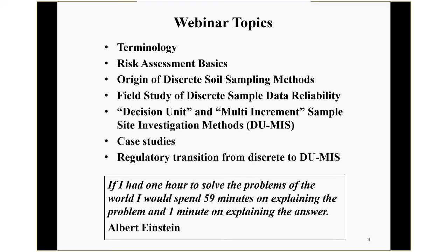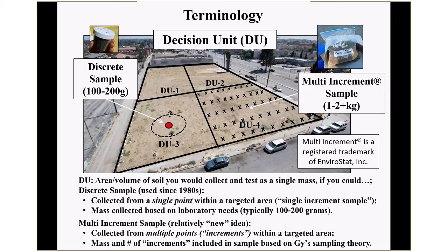Quick notes on terminology. First, what's a decision unit? A decision unit — the best way to think of it — is an area or volume of soil you would collect and test as a single mass, as a single sample, if you could. Maybe it's your front yard or some spilled area. You'd like to send it all to the lab as one sample, but you can't, so you have to collect a representative sample.